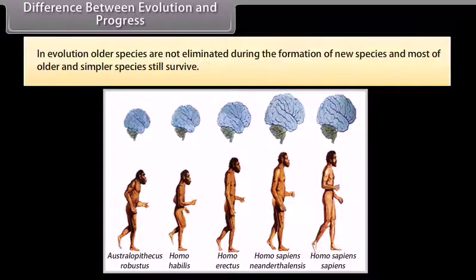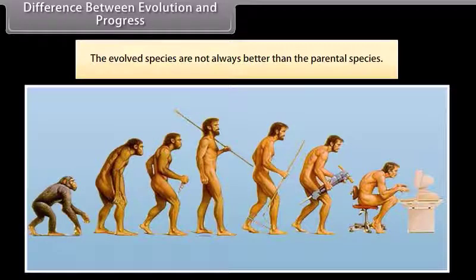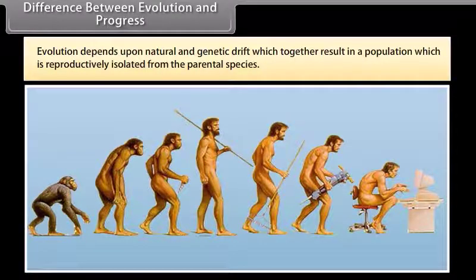Difference between evolution and progress: In evolution, older species are not eliminated during the formation of new species and most older and simpler species still survive. The evolved species are not always better than the parental species. Evolution depends upon natural selection and genetic drift which together result in a population which is reproductively isolated from the parental species.